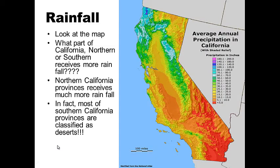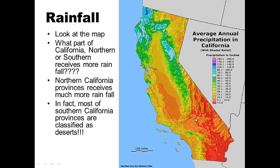The last topics are rainfall and the California aqueduct system. Looking at the map, northern California provinces receive much more rainfall. California is pretty much a desert overall, and most of southern California's provinces are classified as deserts — down south you get very little rainfall.